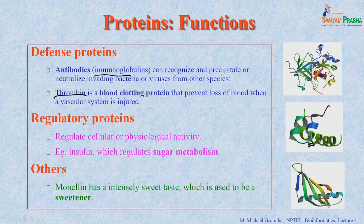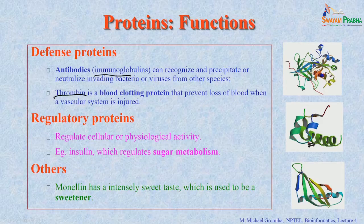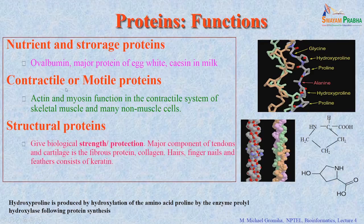There are also regulatory proteins that regulate cellular physiological activity. For example, insulin is a well-known example — it regulates sugar metabolism. If you have diabetes, you need to have insulin. There are also other proteins with different functions; for example, monellin is a protein that is also used as a sweetener.